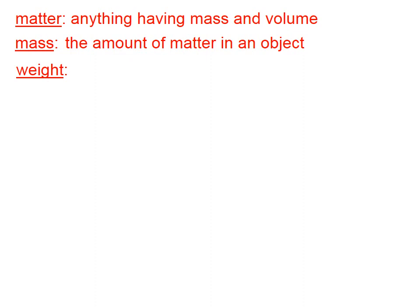Matter is anything having mass and volume. Essentially, matter is anything that's made of atoms. Mass is the amount of matter in an object. In other words, it's the amount of stuff. It's a measure of the number of atoms and the type of atoms. It's how much stuff. That's what we mean by mass.